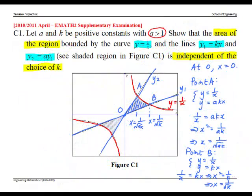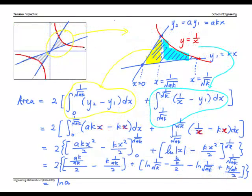Recall the question asks us to show that the area is independent of the choice of K. Now, looking at the answer for the area, ln A is independent of the choice of K. Hence, we have proved the required statement.